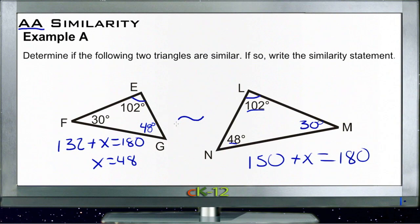We need to write the similarity statement, and we have to think a little bit about that. We have to make sure that we write them in the same order—we have to make sure that we write the corresponding angles next to each other and in the same order in the similarity statement. If we start with our left-hand triangle here and start down at the 30 degree angle F, we can write our similarity statement as triangle FEG, and we can say that is similar to...